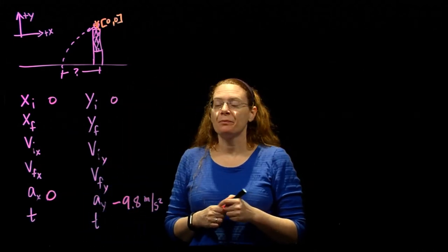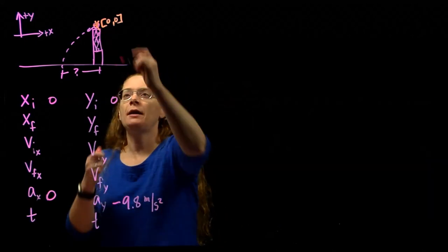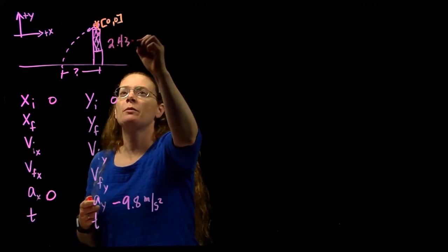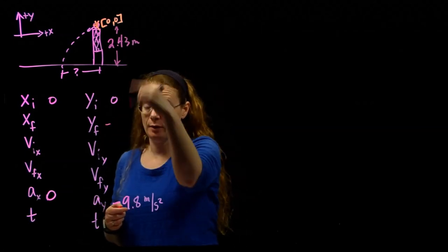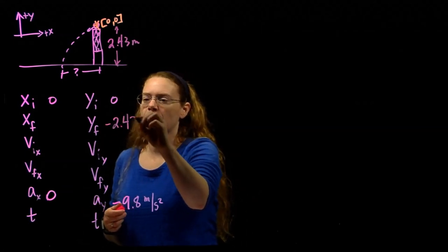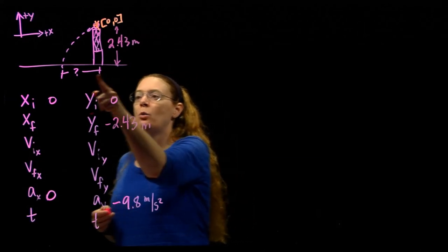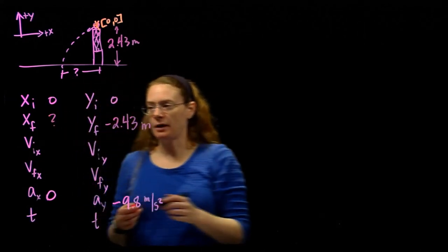What else do we know? We know the initial height of the net, so if it starts here and the net is 2.43 meters high, then our final is negative below 2.43 meters. We want to know where it ends, so our x final is our question mark.